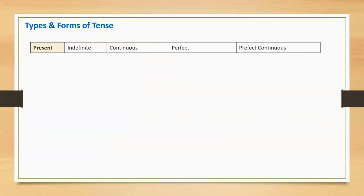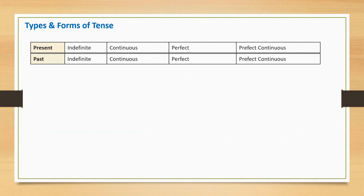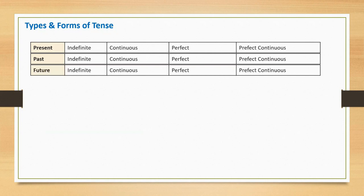For example: present indefinite, present continuous, present perfect, and present perfect continuous. Past indefinite, past continuous, past perfect, and past perfect continuous. Future indefinite, future continuous, future perfect, and future perfect continuous.